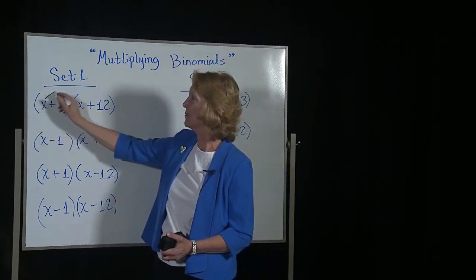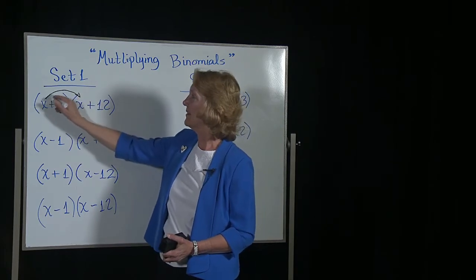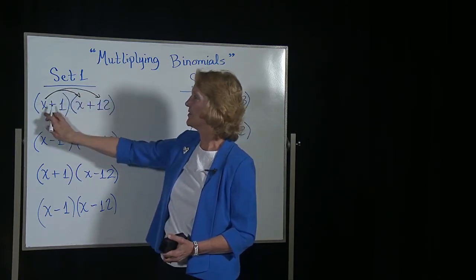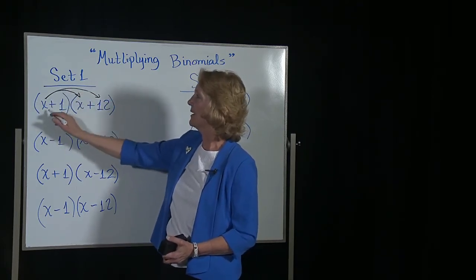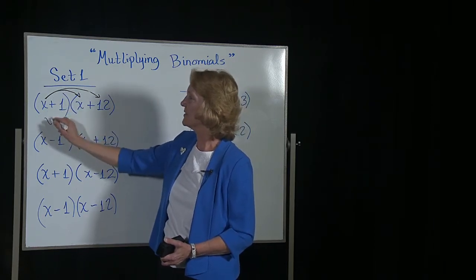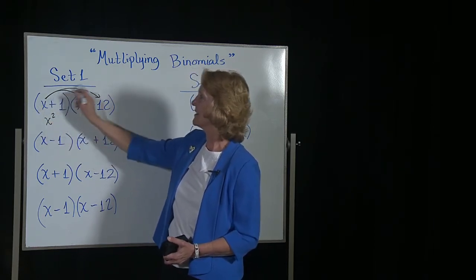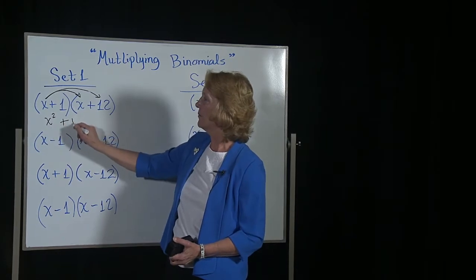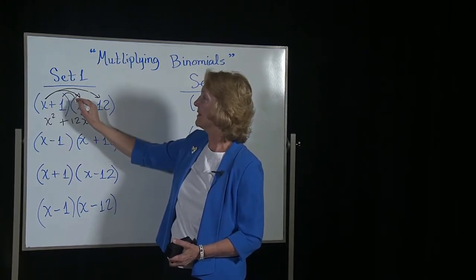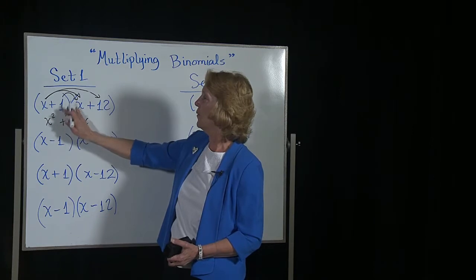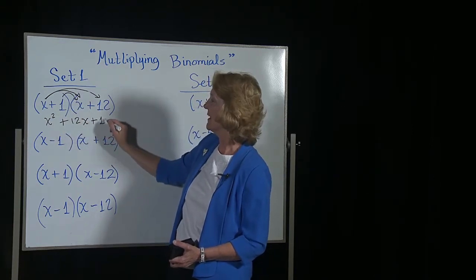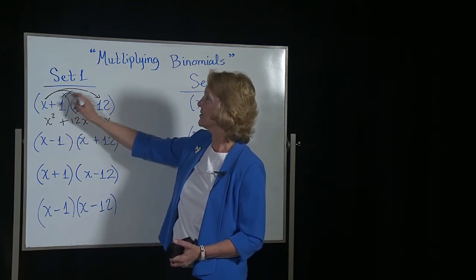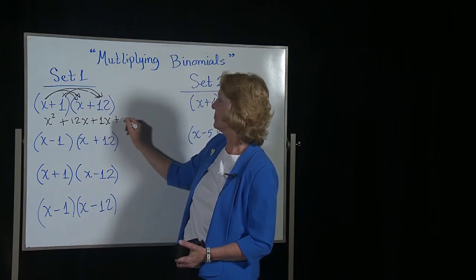If we say, let's multiply this first term times each of these, we get x times x, which is x squared, x times 12, which is 12x. Then we do it with this factor. 1 times x is 1x, and 1 times the 12 is simply 12.